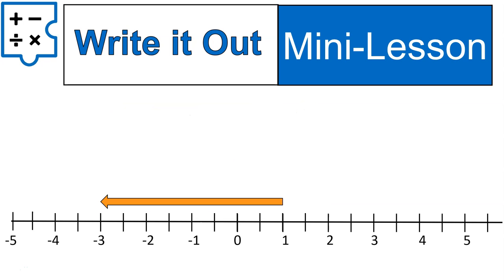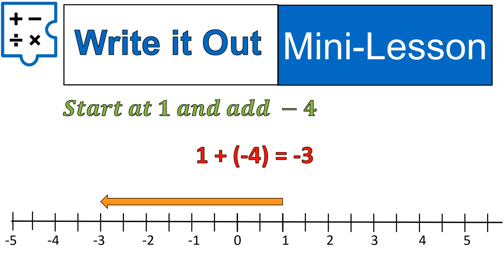Now we're going to write it out. We have another question here where we start at one and then we go to the left one, two, three, four spaces. So we start at one and we add negative four. We're going to the left four spaces. We would write this out as one plus negative four is equal to negative three. That's how this would work.